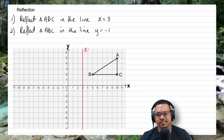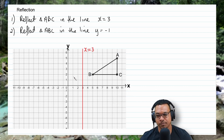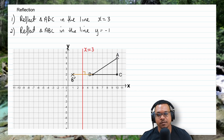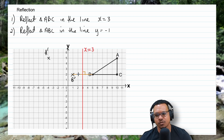We reflect each point individually. Point B is two units away from the mirror line, so image B prime is also two units away on the other side. The line connecting B and B prime is at right angles to the mirror line. For A, it's 7 units away, so A prime is 7 units on the other side. For C, also 7 units away, giving us C prime 7 units on the other side. We connect the points with a ruler to form the image.